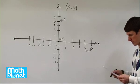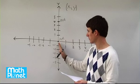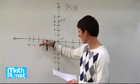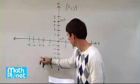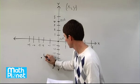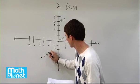Next we have negative 2, negative 4, so the x is negative 2, so we go left 2, 1, 2, and then we go down 4, 1, 2, 3, 4. So right about here, negative 2, negative 4.